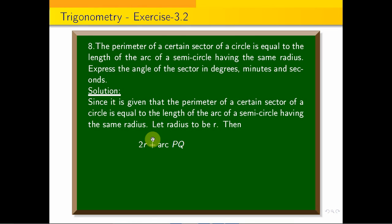The perimeter of the sector: 2r plus arc PQ is equal to the arc length of the semicircle. That is the arc length of the semicircle, which is πr.